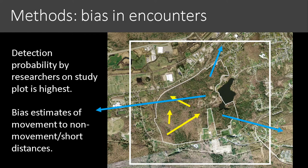Even using bird banding records, there are still biases in encounters. Specifically, because detection probability by researchers on the study plot is highest, that can generate a bias toward overestimating the probability of birds staying close. In other words, using researcher-generated encounters will bias our movement estimates toward non-movements or very short-distance movements, because that's where researchers are most likely to encounter birds — they'll miss the ones that have moved farther away.